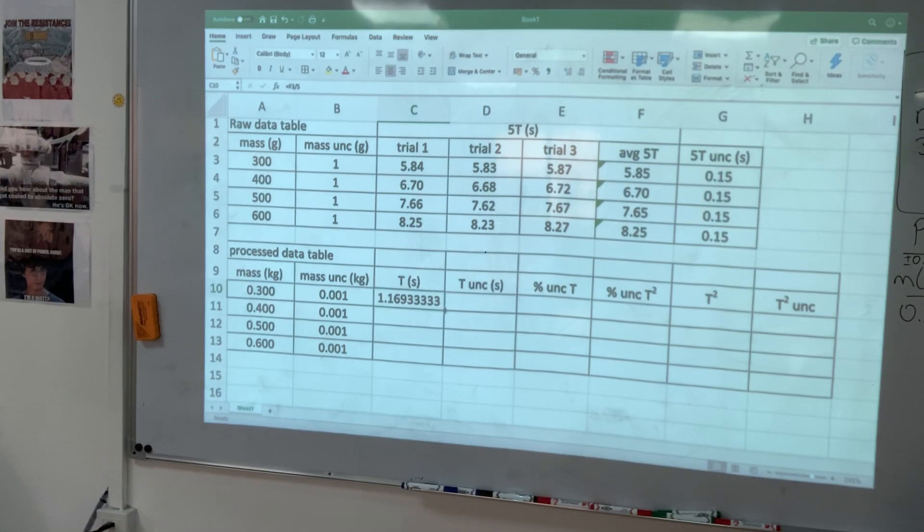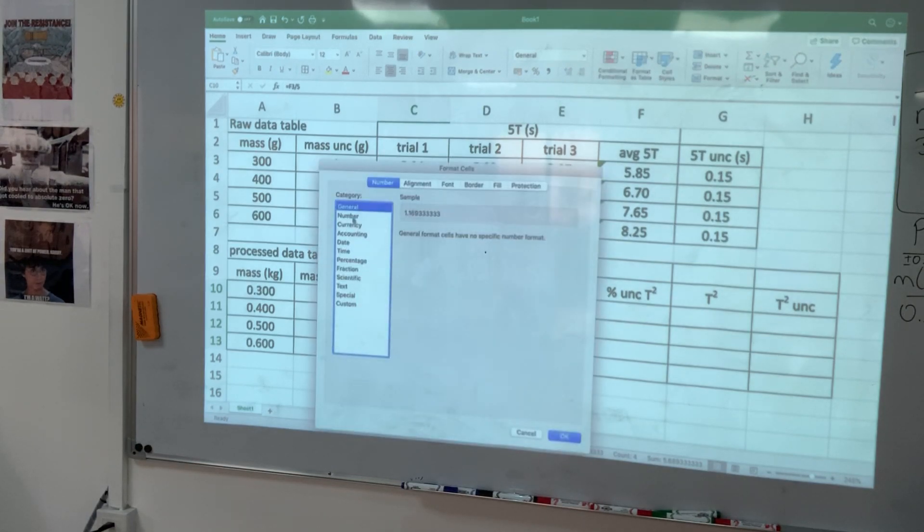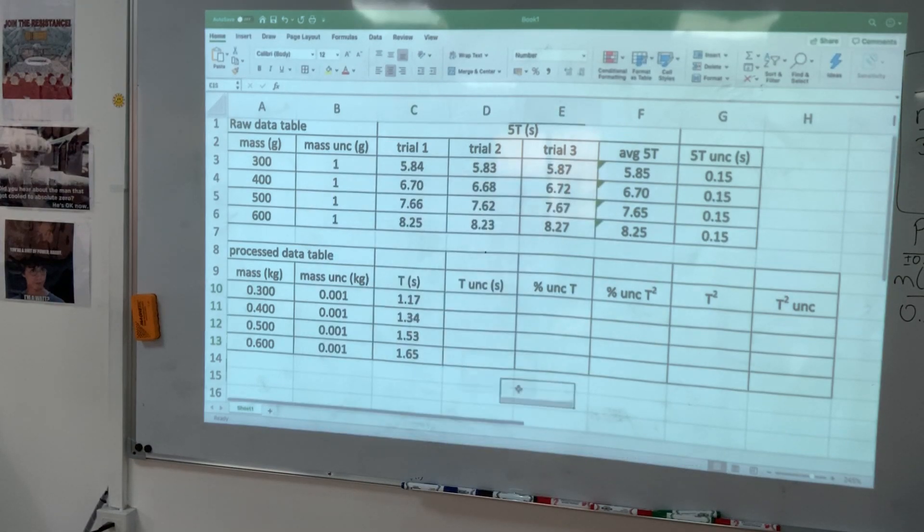Select, little black plus sign, click, pull, drop. Now while I'm there, I'm going to make everyone have two decimal places. And I'm happy with that. And the time uncertainty, I'm going to take this number, divide by 5.